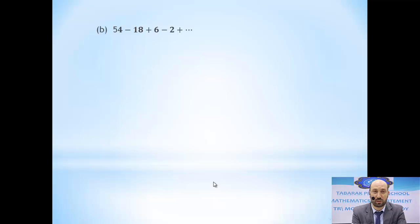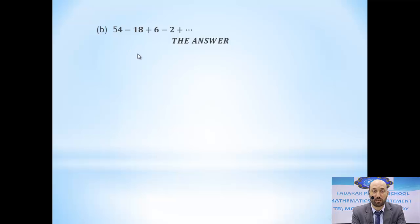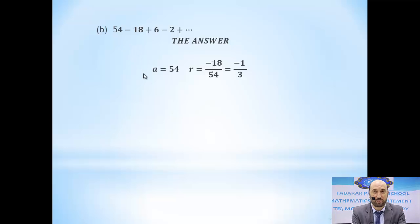For the second example, we need to find the sum to infinity for the geometric series 54 - 18 + 6 - 2 + ... The first term is 54. If you look at it, the difference between 54 and 18 is not the same as between -18 and 6, so this is a geometric series. We divide any two consecutive terms to find the common ratio r. Here a equals 54 — not -18 or 6, because a is the first term.